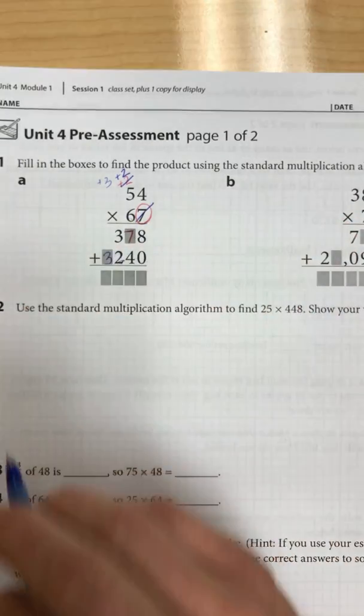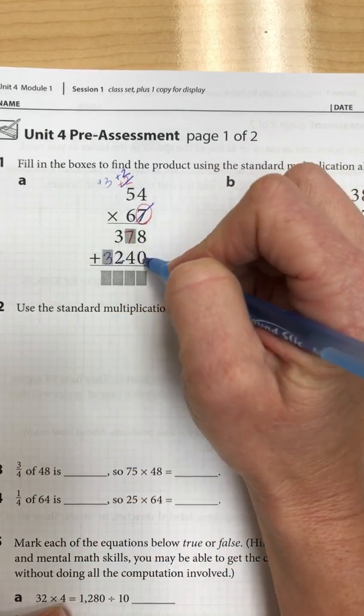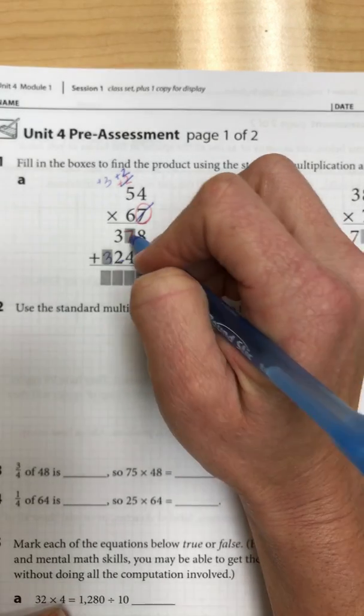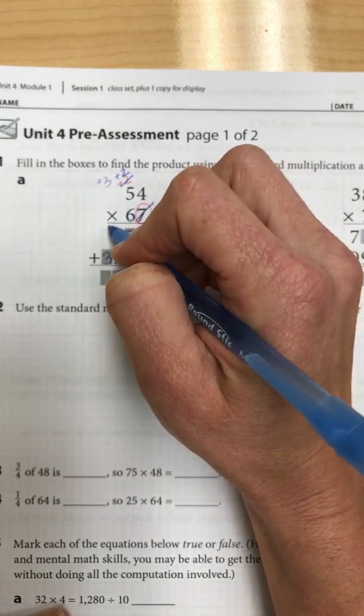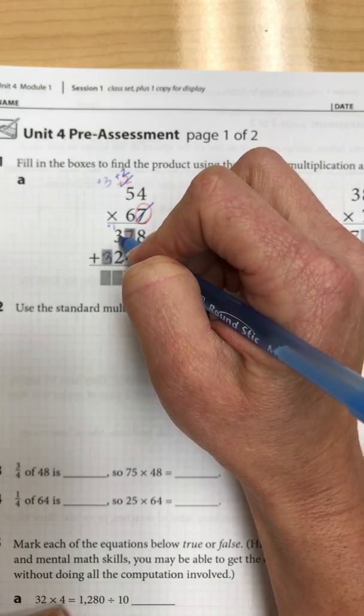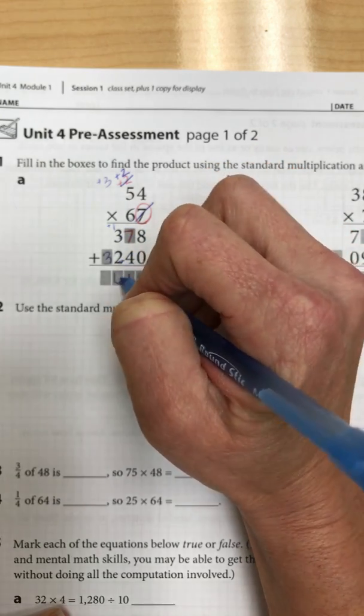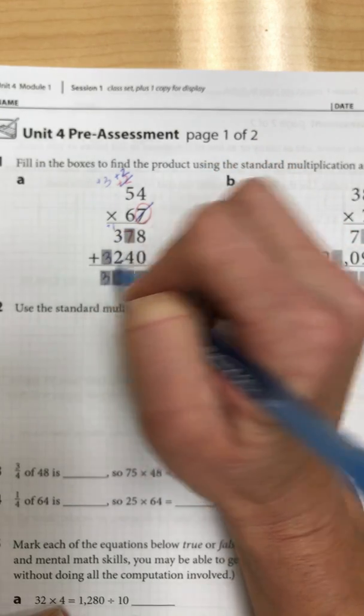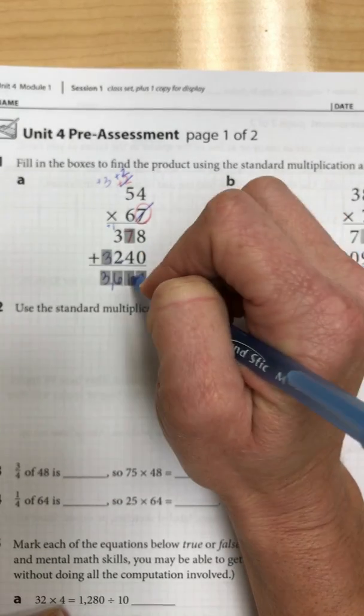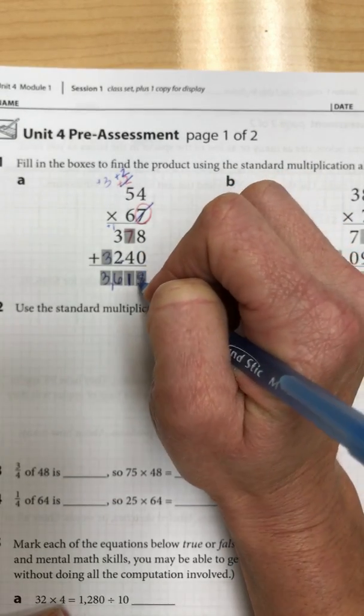Now all I have to do is add my numbers together. 8 plus 0 is 8. 7 plus 4 is 11, carry my 1. So I have 1 plus 3 is 4, 2 is 6. And then I drop my 3 down. 3,618 is my final answer.